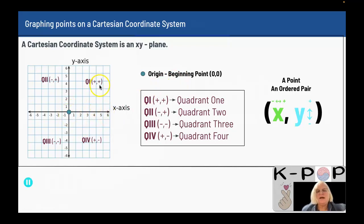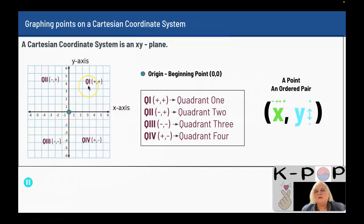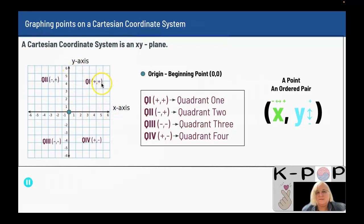When your x-axis and y-axis cross each other, you have four spaces called quadrants. The word quad means four. This is quadrant one — we designate it in Roman numerals as QI. Your x is positive because you're going to the right, and you're going up so your y is positive.